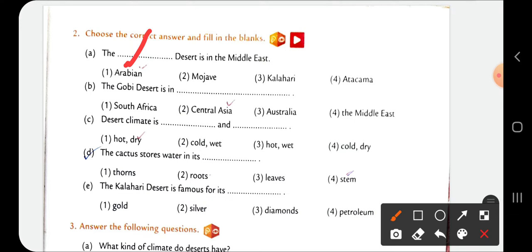The Gobi Desert is in Central Asia. Then third one: Desert climate is dash and dash - hot and dry. The cactus stores water in its stem. The Kalahari Desert is famous for its diamonds.